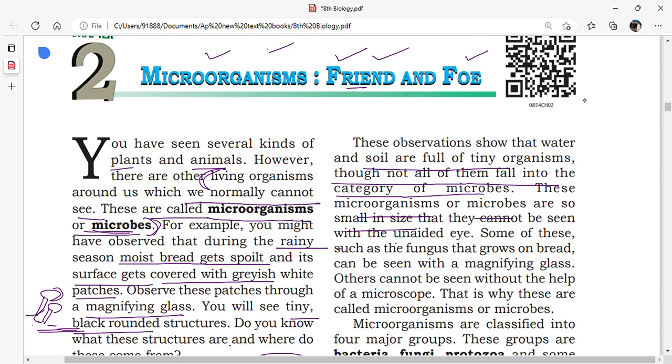These microorganisms or microbes are so small in size that they can't be seen with the eye. Some, such as fungus that grows on bread, can be seen with a magnifying glass. Others cannot be seen without the help of a microscope. That is why these are called microorganisms or microbes.